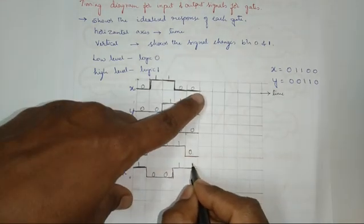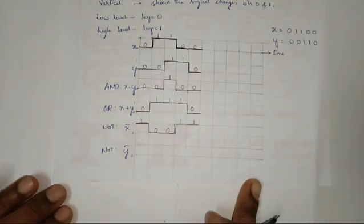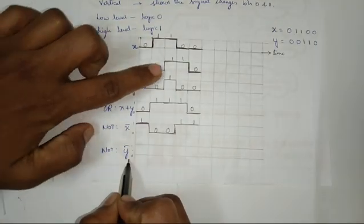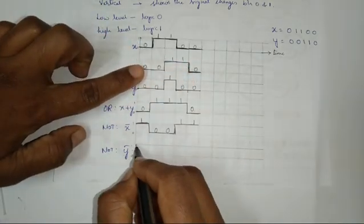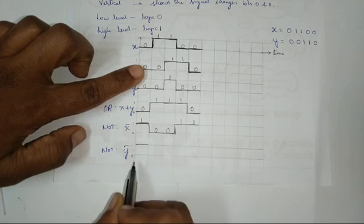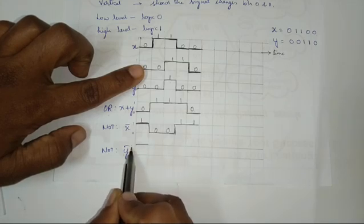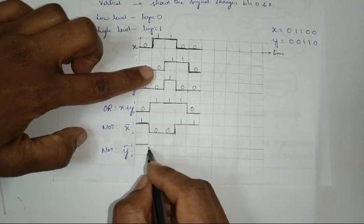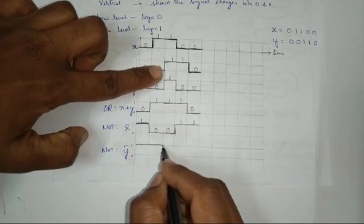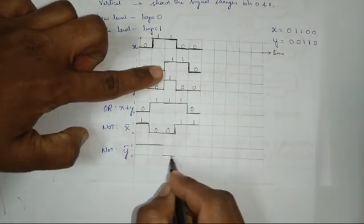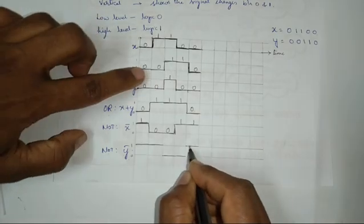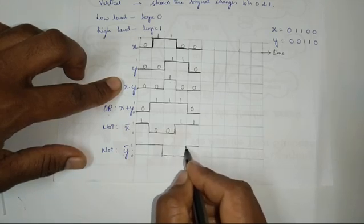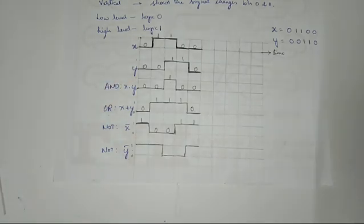Similarly for Y bar, the Y input is 0, 0, double 1, 0. For 0 it is 1, for 0 again 1, and for 1 it is 0. For 1 it is 0, and for 0 it is 1. Let us join the incomplete timing diagram.